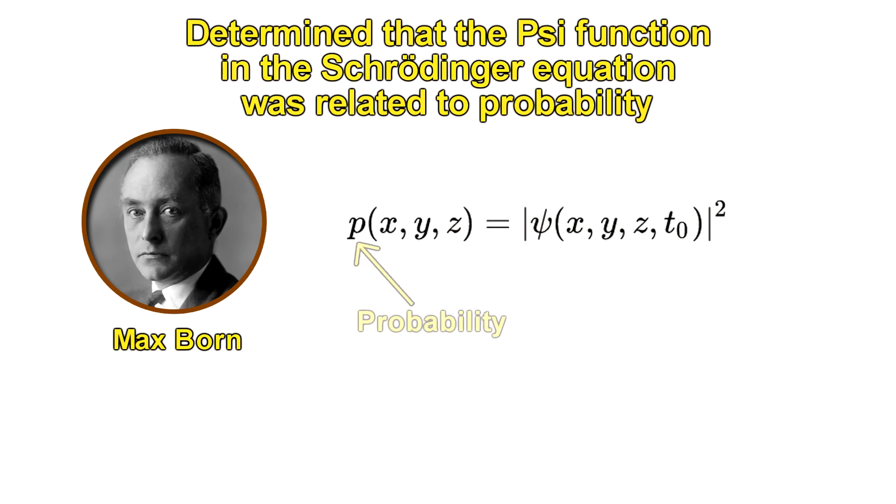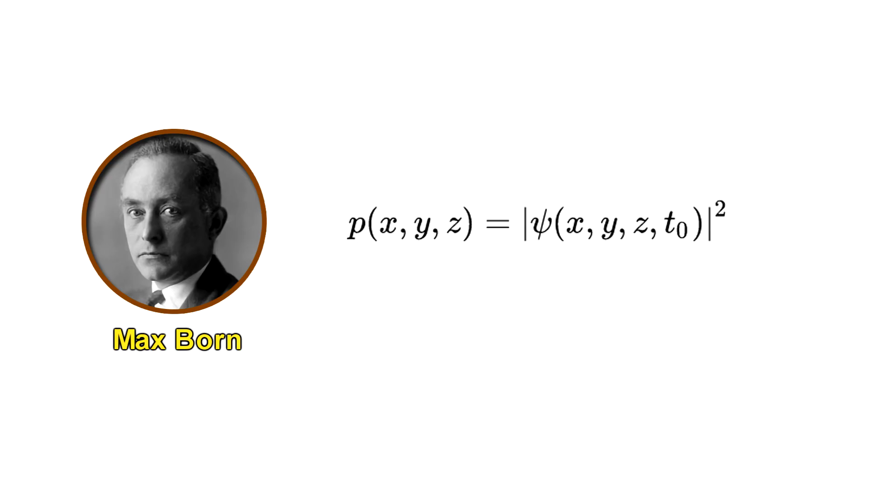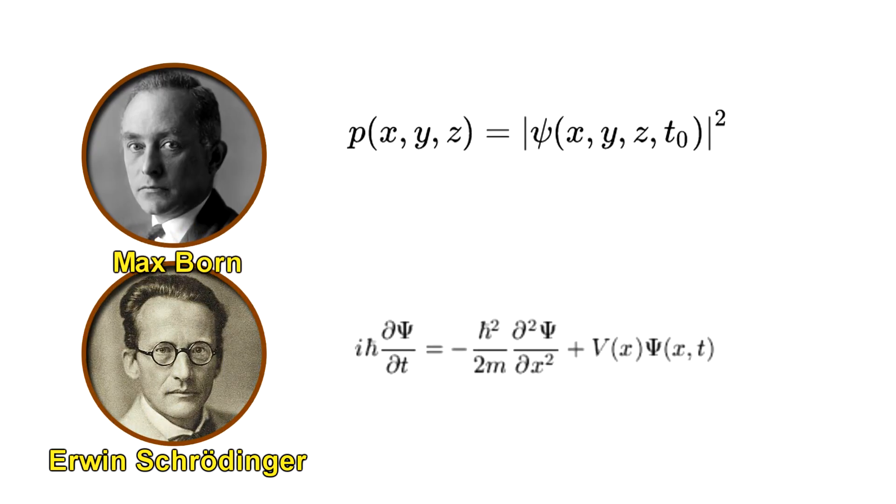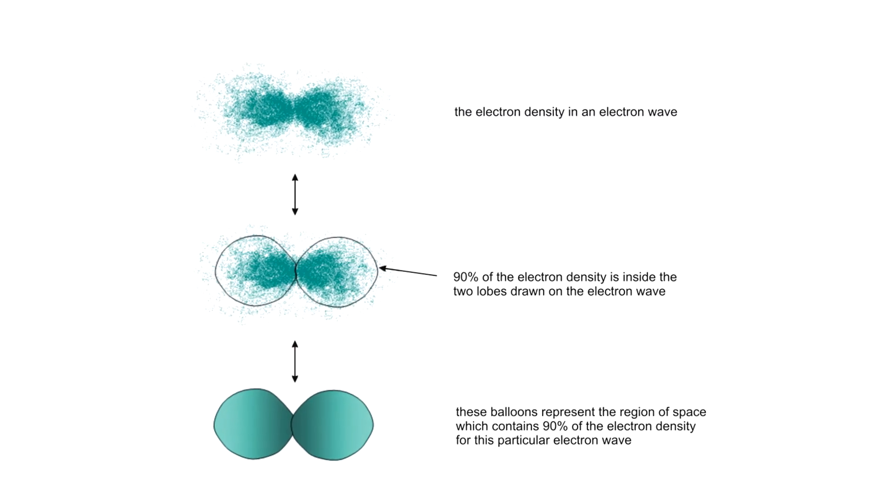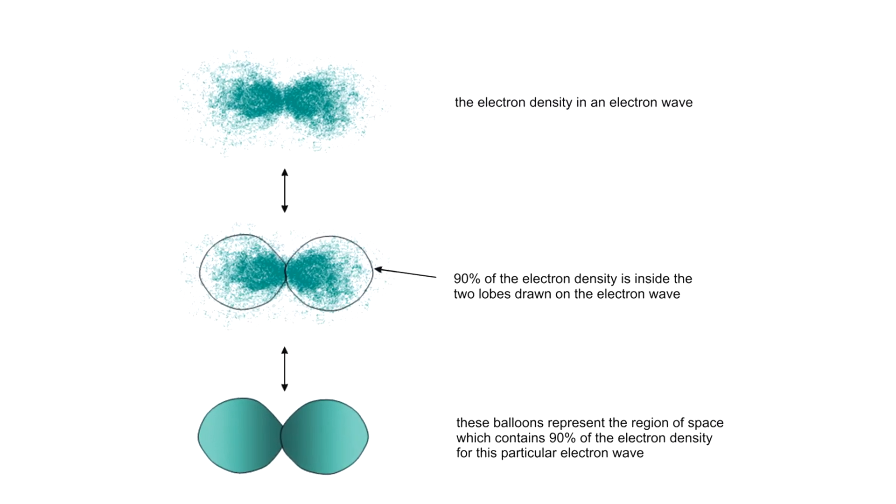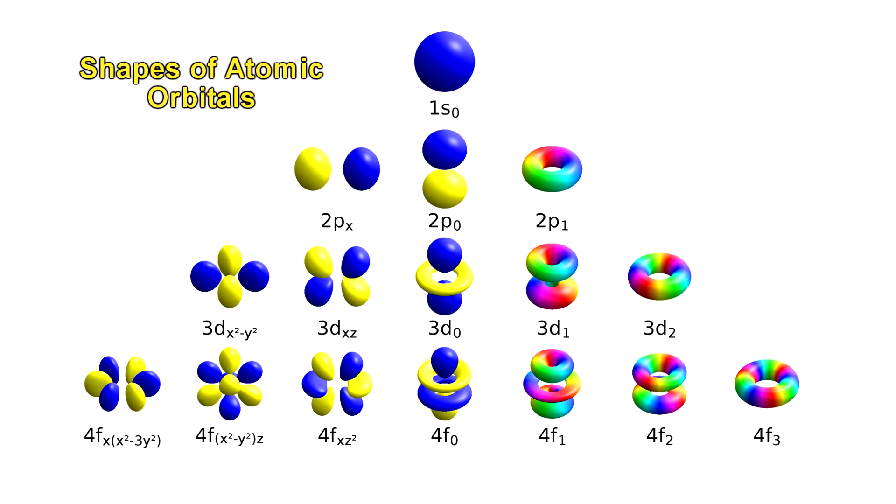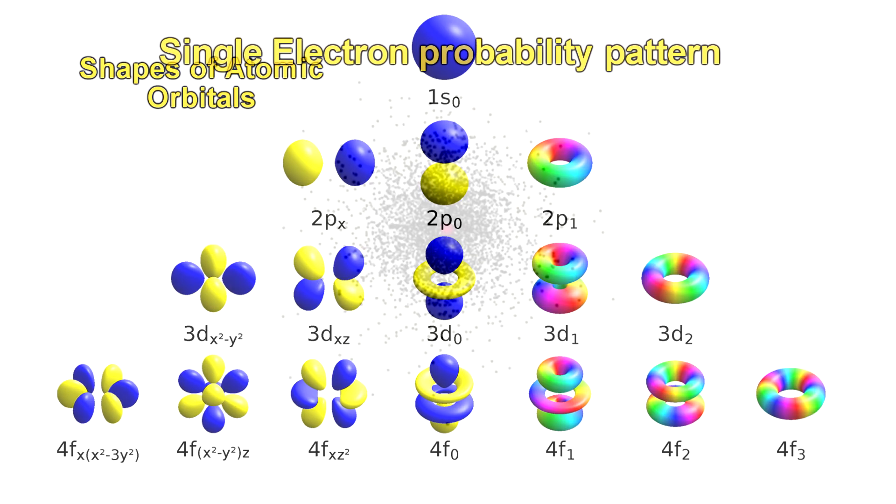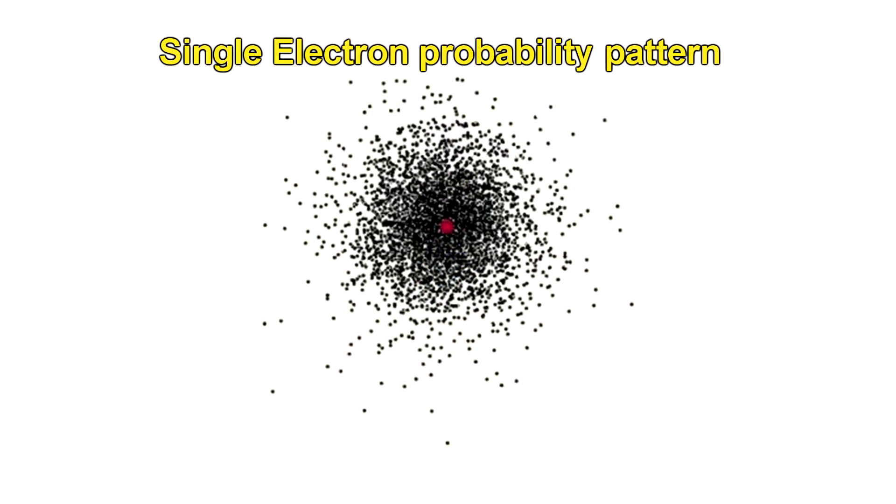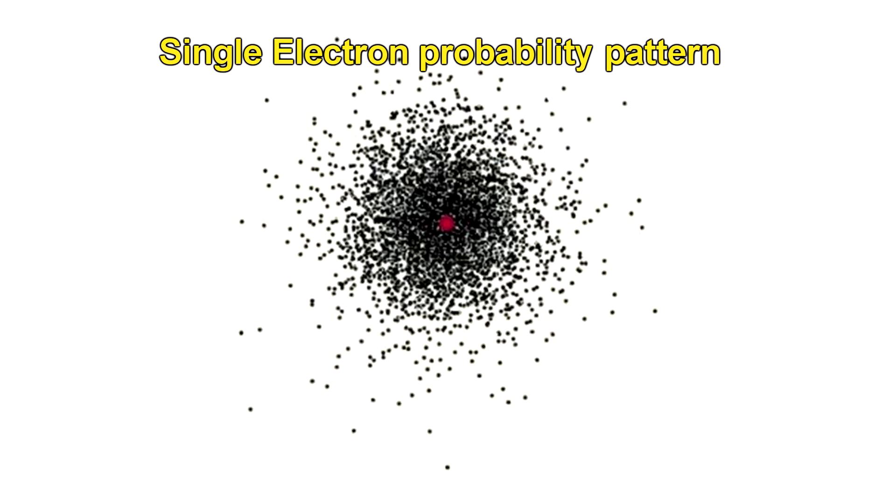In 1926, German physicist Max Born worked out that the psi function was related to probability. He said it represented the probability of finding the electron in any one point in space. So for example, this equation describes the behavior of electrons in an atom. It shows how the electrons occupy certain orbitals, and what their shapes are. These shapes are really the probability densities of finding the electron in any particular spot. And unless you measure it, you can only come up with the probability of finding the electron at any particular radius.